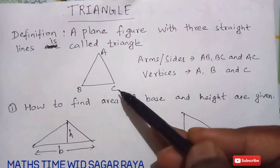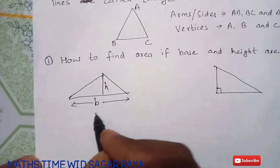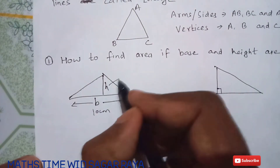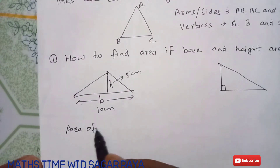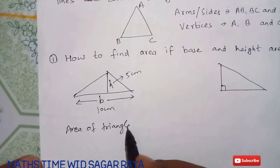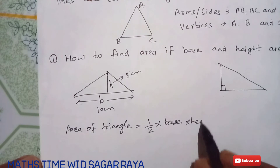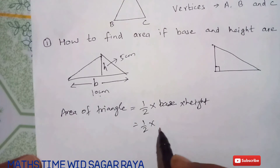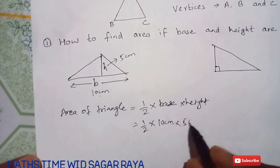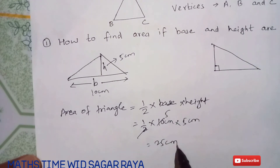Now, this is a triangle where this one is the base and this one is the height. Suppose the base is 10 cm and the height is 5 cm. We can find the area of the triangle using the formula: half into base into height. So, half into 10 cm into 5 cm — cancelling the 2, we get 25 cm square.